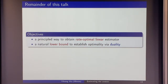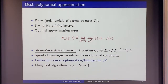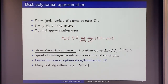What's a principled way to design an estimator that is linear with provable optimality, and also yields a natural lower bound through duality? A little background: you can define the best polynomial approximation for some function on a finite interval as the best approximation under L∞ norm. By denseness of polynomials, you can approximate a continuous function well with high degree, and how fast depends on smoothness. You can view the best error as a finite-dimensional convex program or an infinite-dimensional linear program.